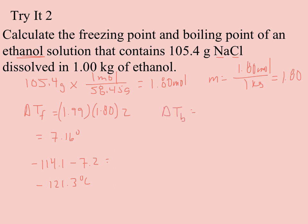Looking at boiling point, I need a KB for ethanol. That's 1.22. M is still 1.8. I is still 2. So 1.22 times 1.8 times 2, I'm getting a change of 4.4 degrees Celsius. My original boiling point for ethanol was 78.5. It's elevated, so I add the 4.4. And I come up with a new boiling point of 82.9 degrees Celsius.